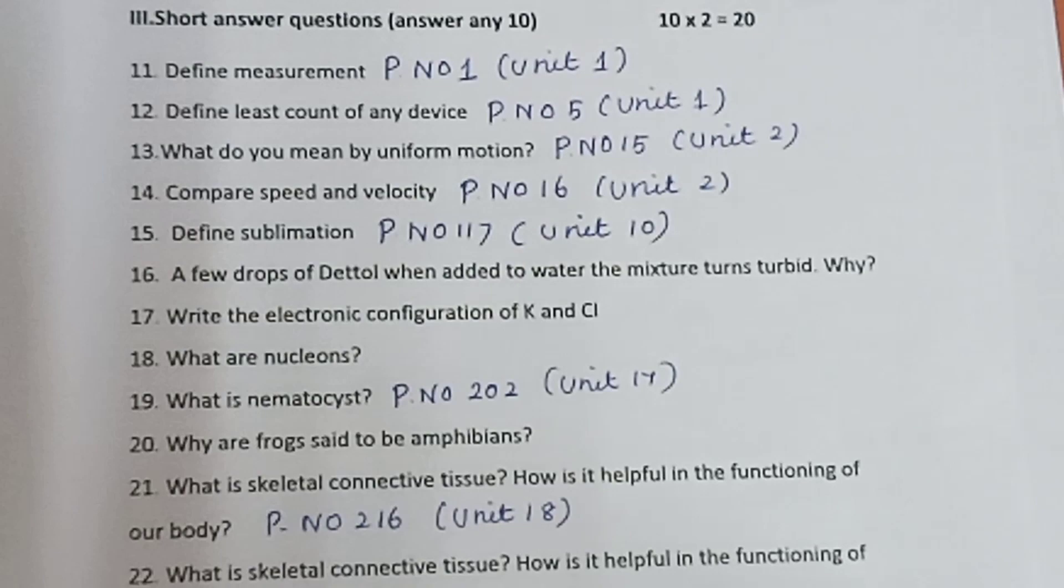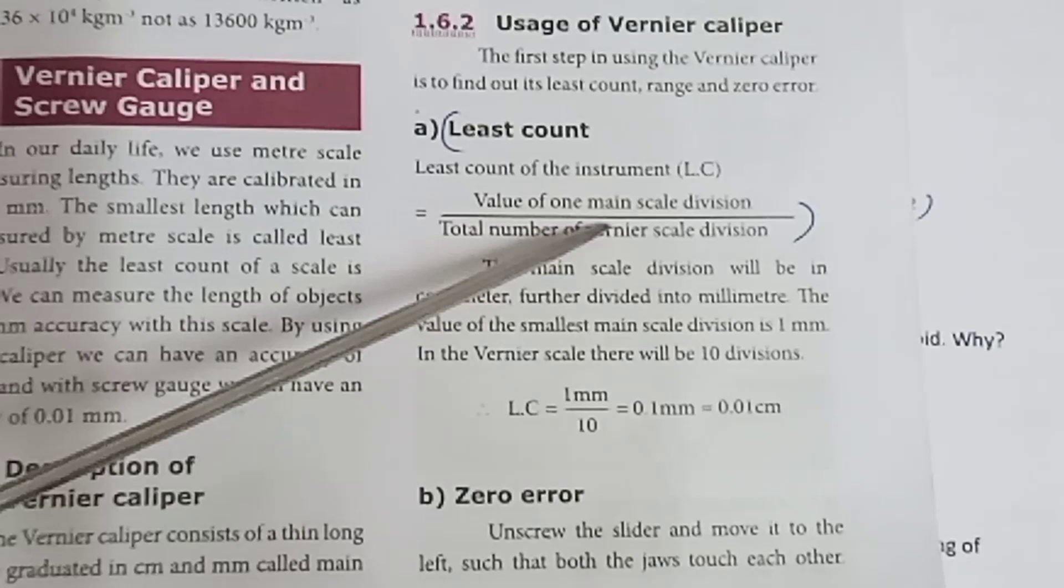Question 12: Define least count of any device. Page number 5, Unit 1. Least count is the smallest value that can be measured by the measuring instrument.